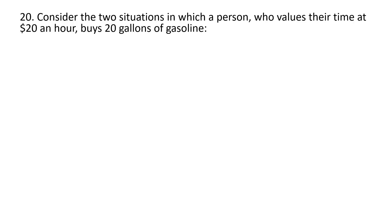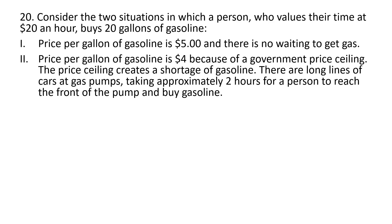Question 20. Consider two situations in which a person who values their time at $20 an hour buys 20 gallons of gasoline. In situation one, price per gallon is $5 with no waiting. In situation two, price per gallon is $4 because of a government price ceiling, which creates a shortage of gasoline. There are long lines at gas pumps, taking approximately two hours for a person to reach the front of the pump and buy gasoline.